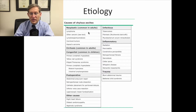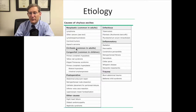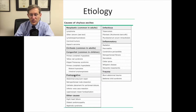This slide shows the differential diagnosis of the etiology of chylos ascites. Neoplastic causes in adults are very common, followed by cirrhosis — so if you have a patient with cirrhosis, keep the possibility of chylos ascites in mind. Post-operative causes will be discussed further, but any kind of trauma to the lymph vessels can cause this. In developing nations, infectious etiologies are also very important.